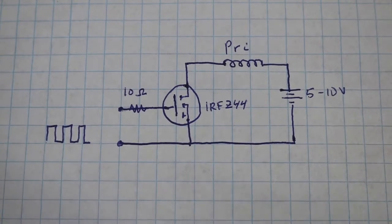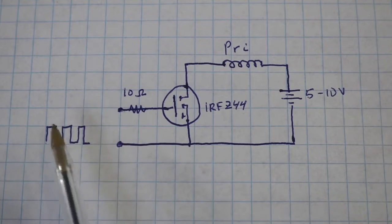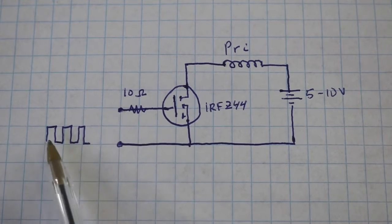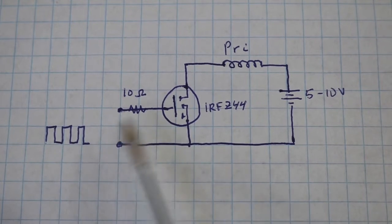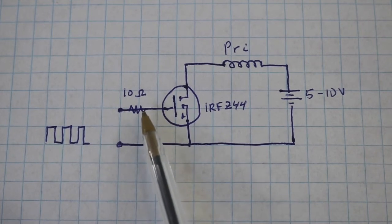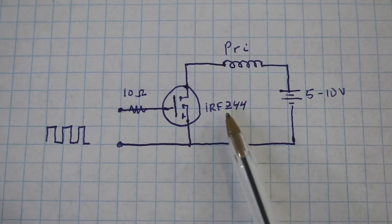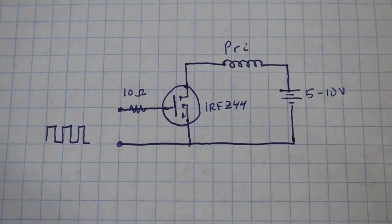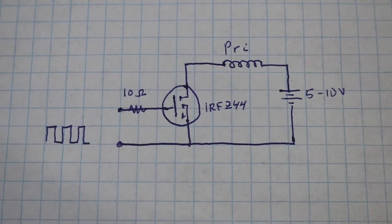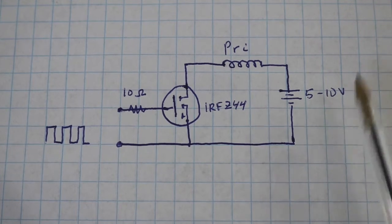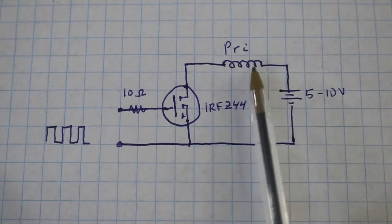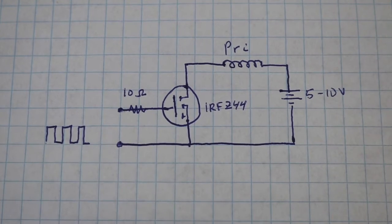Here's the circuit, super simple as you can see. This is the output of the PWM generator, rectangular pulse of waves, that is fed to the MOSFET via this 10 ohm resistor. I am using an IRF-C44 MOSFET, but you can use any power MOSFET N channel, and it is fed with 5 to 10 volts DC, and here we connect the primary that we wound on the core of the transformer.